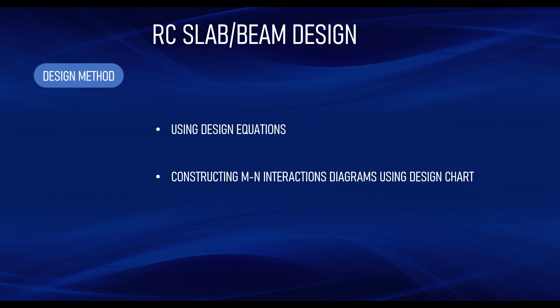You can also make use of the design chart by constructing a moment and axial load interaction diagram. This applies for slab and beam where the dominant effect is the bending moment. When designing a slab, we design it for bending moment most of the time — we neglect the axial load because in the general arrangement of our building we avoid axial load on slabs. For beams subjected to both bending moment and axial load, constructing the moment and axial interaction diagram is also applicable.